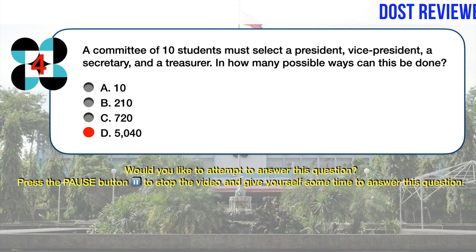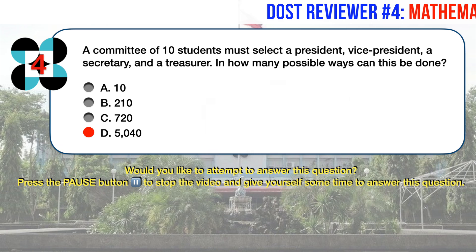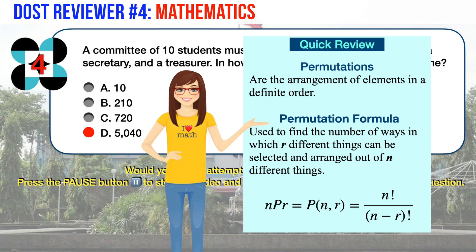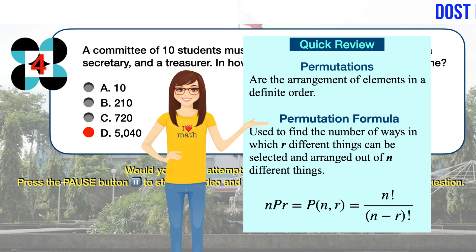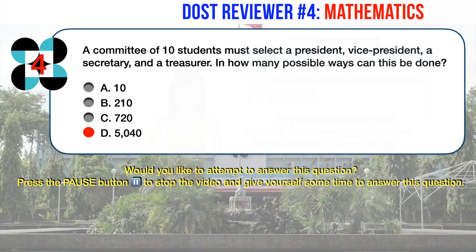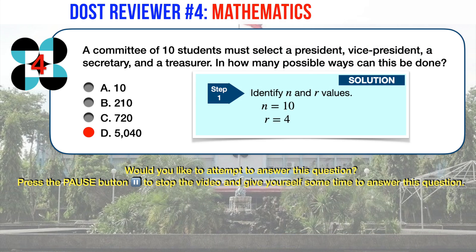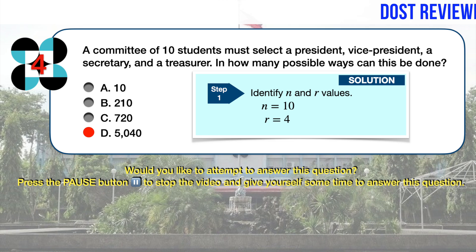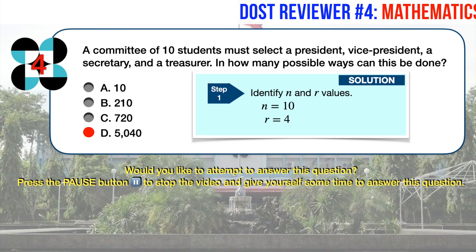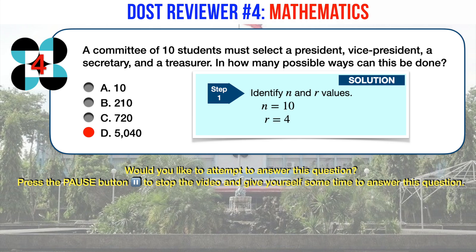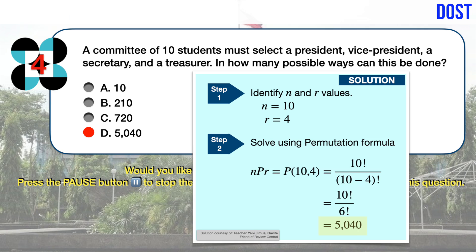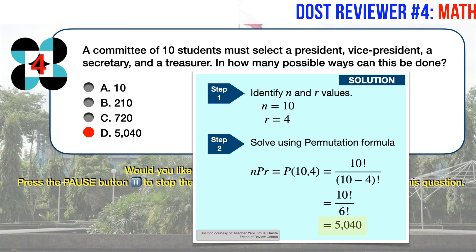The correct answer is D, 5040. This is a permutations problem. Permutations are the arrangement of elements in a definite order. The permutation formula, NPR, is used to find the number of ways R different things can be selected and arranged out of N different things. There are 10 students, so N equals 10. There are 4 positions to fill, so R equals 4. Plugging these values into the permutation formula, we arrive at 5040.